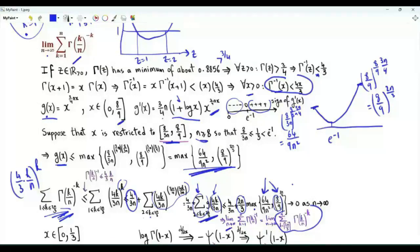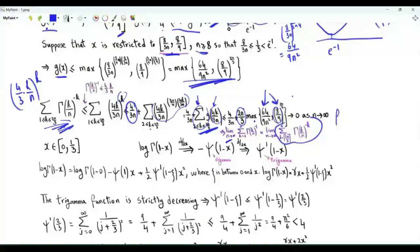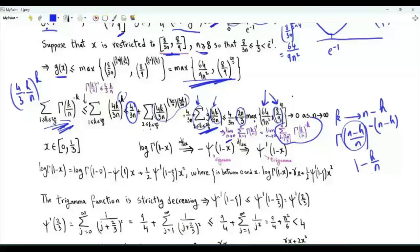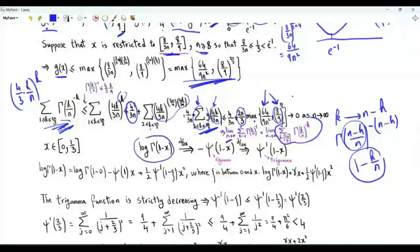For the second sum, from ceiling(2n/3) to n, we replace k by n minus k. The summand becomes Γ((n−k)/n)^(−(n−k)) = Γ(1 − k/n)^(k−n). The argument of the gamma function, 1 − k/n, lies in the range from 0 to 1/3. We now need bounds on log Γ(1−x) for x between 0 and 1/3.